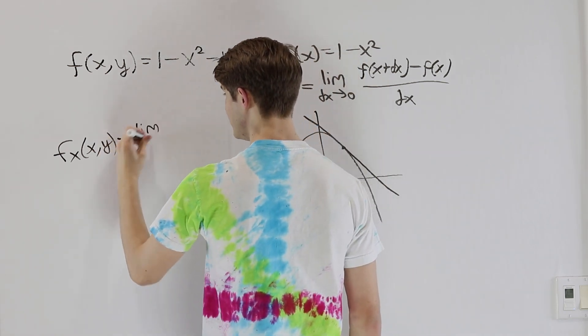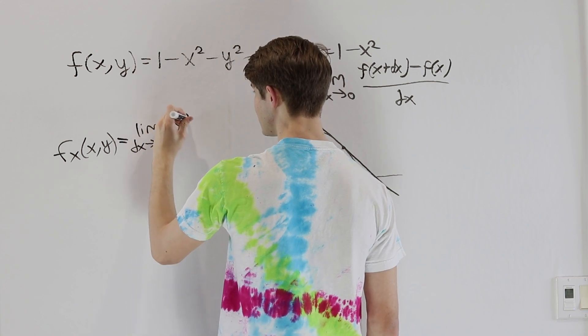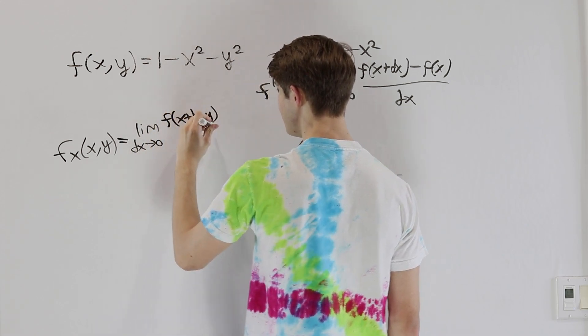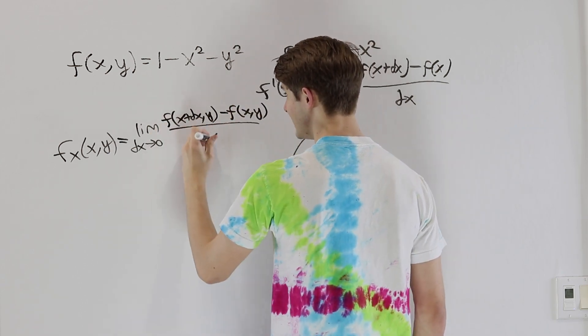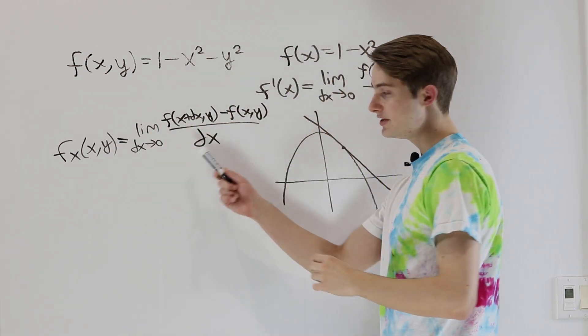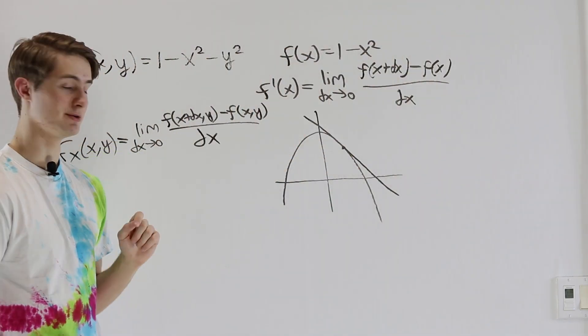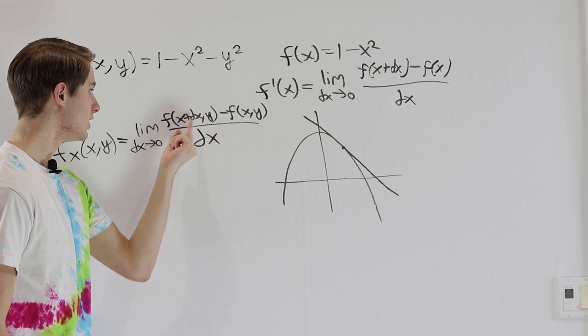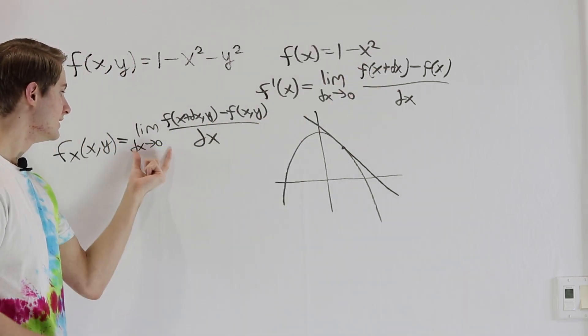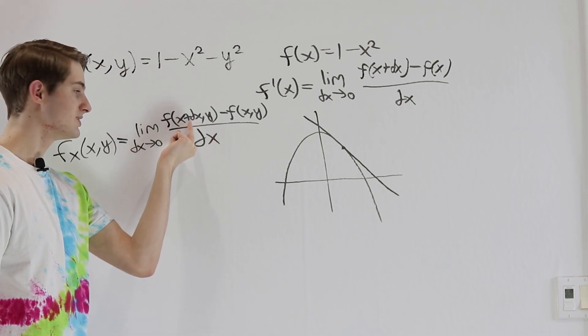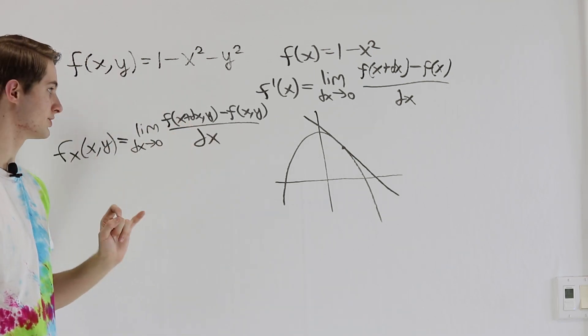That's going to equal the limit as dx approaches 0 of f of x plus dx, y minus f of x, y over dx. So notice this definition is almost the exact same as our original definition for a single variable function. All we're doing is putting comma y next to each of those inputs. Again, all we're doing is looking at very small changes in the input to x and seeing how that affects the output of the function.